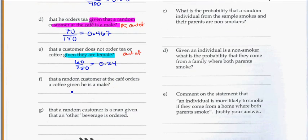For part F, that a random customer at the cafe orders a coffee, given that he is male. So again here, given that he is a male, that is my out of. That is my hint. So I know out of the males, there's 150 of them total.